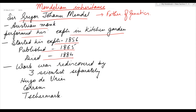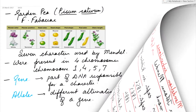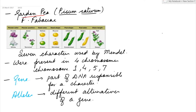His work did not receive any recognition. His work was rediscovered in the year 1900 by three scientists separately — Hugo de Vries, Correns, and Tschermak. Mendel used garden pea, that is Pisum sativum, belonging to family Fabaceae, as the plant for his experiments.